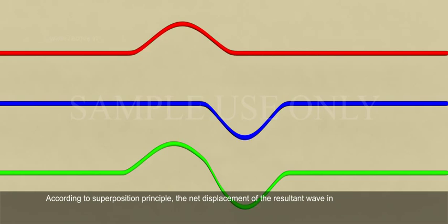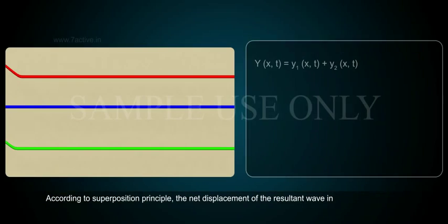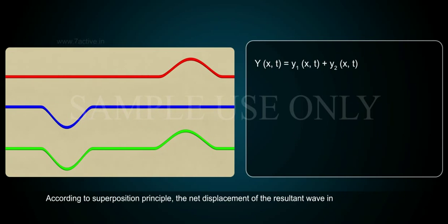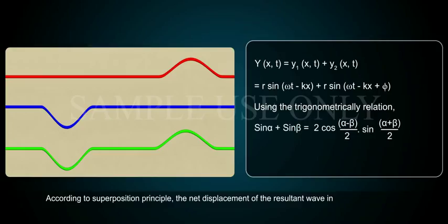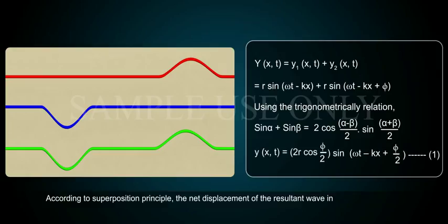According to the superposition principle, the net displacement of the resultant wave y(x,t) equals y1(x,t) plus y2(x,t), which equals r·sin(ωt − kx) + r·sin(ωt − kx + φ). Using the trigonometric relation sin α + sin β = 2·cos((α−β)/2)·sin((α+β)/2), we get y(x,t) = 2r·cos(φ/2)·sin(ωt − kx + φ/2).